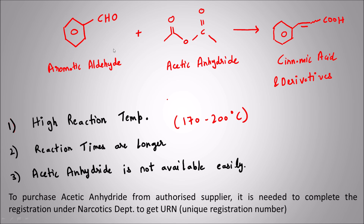This is our aromatic aldehyde. To this aromatic aldehyde I'm adding acetic anhydride and I'm getting a cinnamic acid derivative. Now there are some disadvantages of this reaction. Though it's a really useful reaction to make cinnamic acid and its derivatives, first of all it requires a very high reaction temperature — around 170 to 200 degrees Celsius. The reaction time is also pretty long — about 8 to 10 hours.